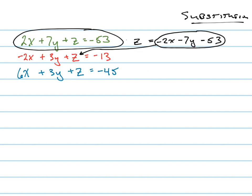When I rewrite this equation — I'm going to use color coding here — it's going to say negative two x plus three y plus, and I'll leave that equals negative 13. So I'm plugging in negative two x minus seven y minus fifty-three. Now that I've done that I'm going to combine these together.